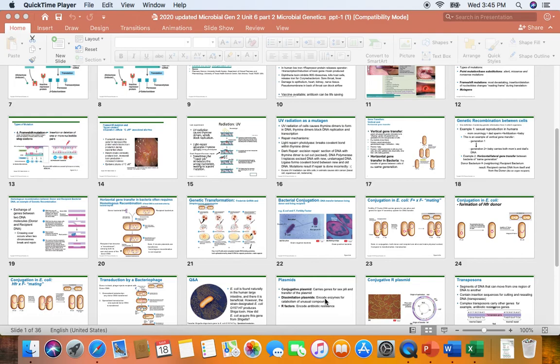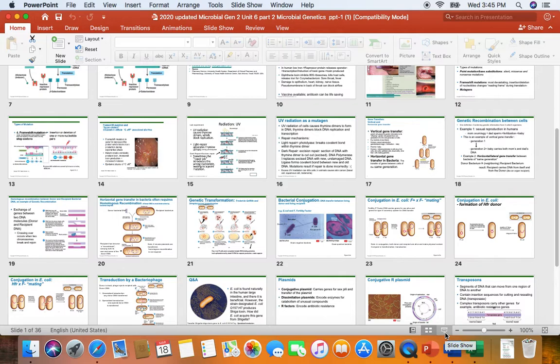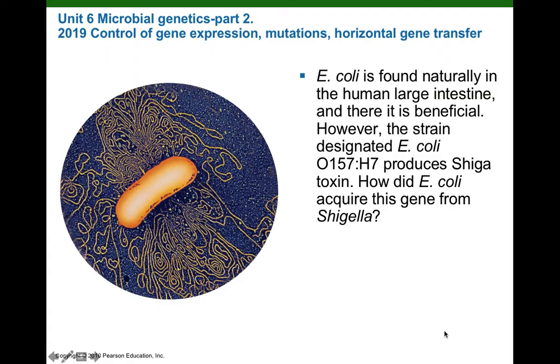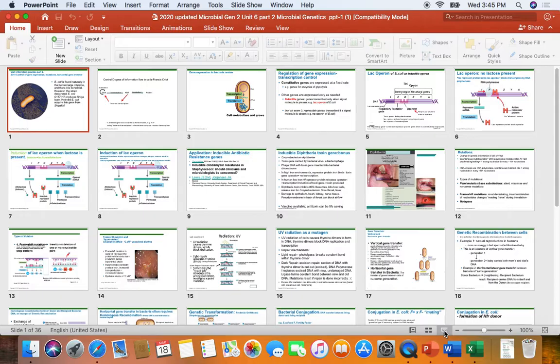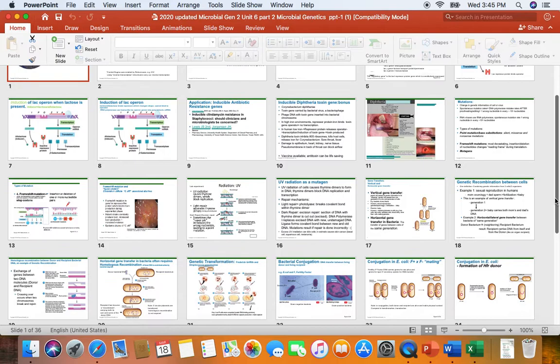This is the second video of three describing the three different ways that bacteria can transfer genetic information horizontally. Previously, in the last video, we talked about Frederick Griffith's discovery of transformation, which is the uptake of naked DNA by a competent bacterial cell.